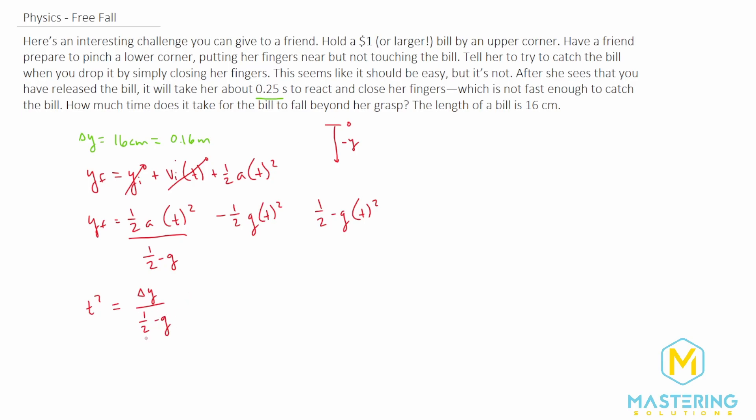Dividing by a fraction is the same as multiplying by the reciprocal. So t squared equals 2 times delta y divided by negative g. We isolate t by taking the square root of both sides. So t equals the square root of 2 times delta y divided by negative g.